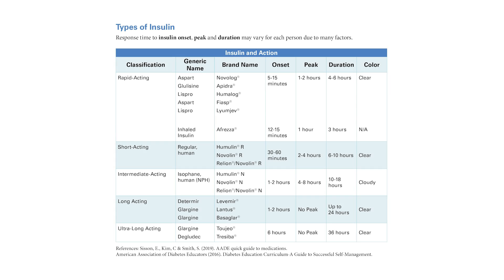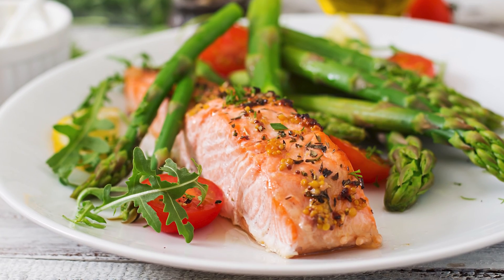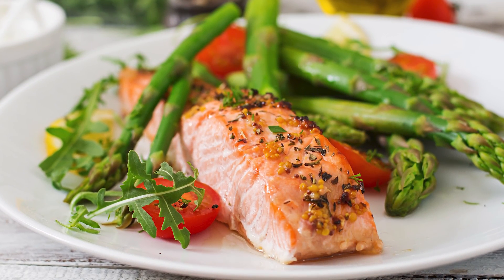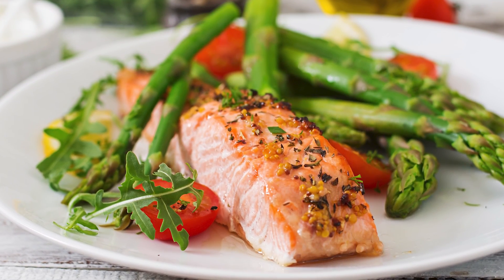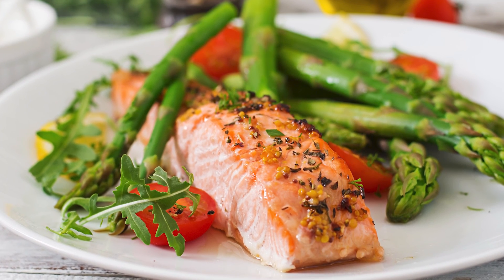It's common to need two types of insulin: a long or intermediate acting insulin to control the sugar produced by the body, and a rapid or short acting insulin to control the sugar received from the food you eat. Rapid and short acting insulins are often given at mealtimes with doses adjusted based on blood sugar levels and the amount of carbohydrates in your meal.